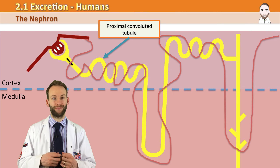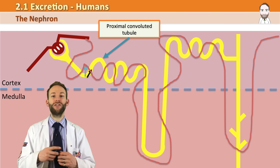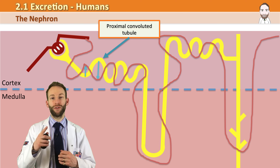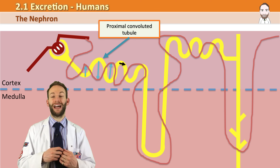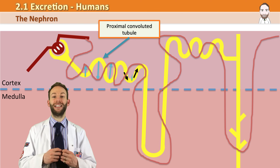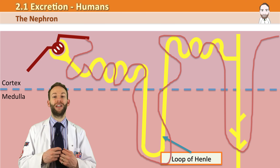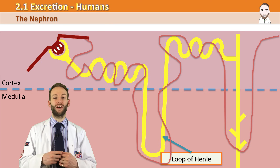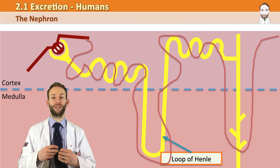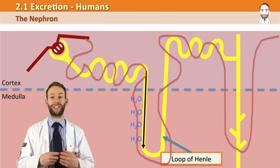Most of this reabsorption happens by diffusion. The glomerular filtrate then continues through the proximal convoluted tubule and down into what we call the loop of Henle. The loop of Henle is used to reabsorb water. It stretches down into the medulla part of the kidney, where there is a high concentration of salts, which causes more water to move out by osmosis and enter the blood.